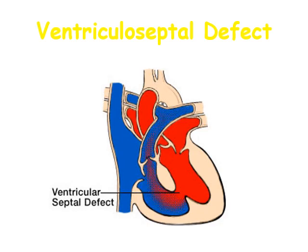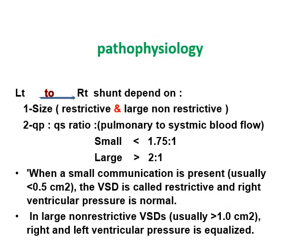This diagram shows ventricular septal defects and the left-to-right shunt, causing mixing of oxygenated blood with the deoxygenated blood in the right ventricle. In VSD, blood flows from the left ventricle to the right ventricle. The shunt depends on the size of the defect and the ratio of pulmonary to systemic blood flow (Qp:Qs). VSD is classified as either restrictive or large and non-restrictive.